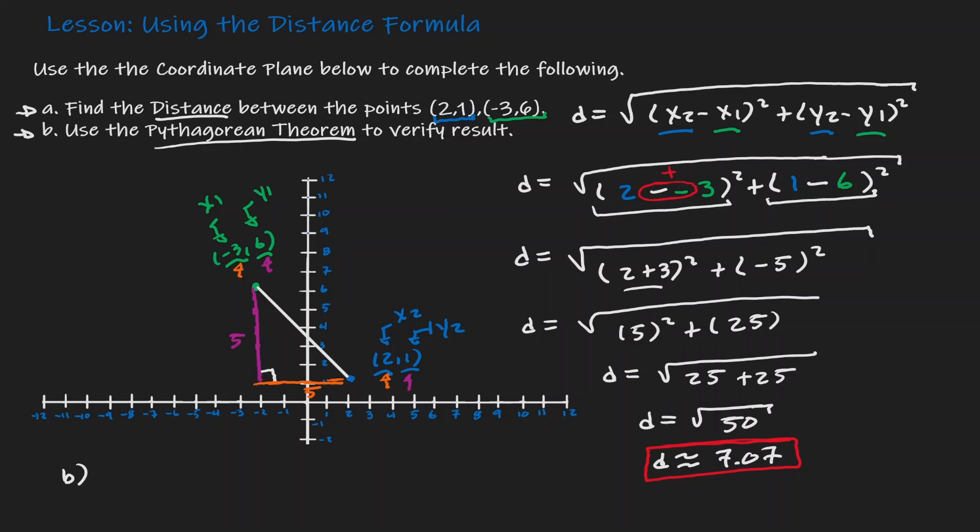And because this is a right triangle, if we apply the Pythagorean theorem, we can see that c is the square root of 50, which is approximately 7.07. And notice that that's the same result as we got when we were using the distance formula.